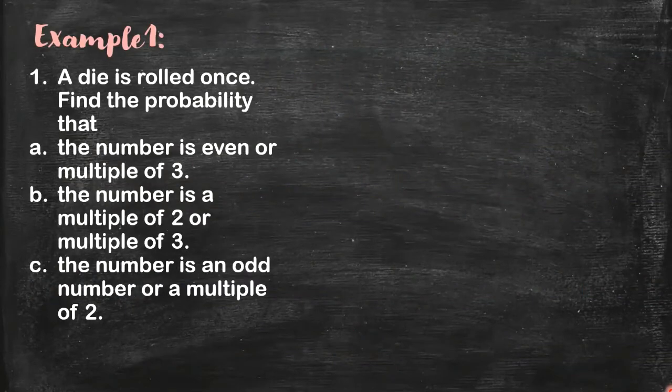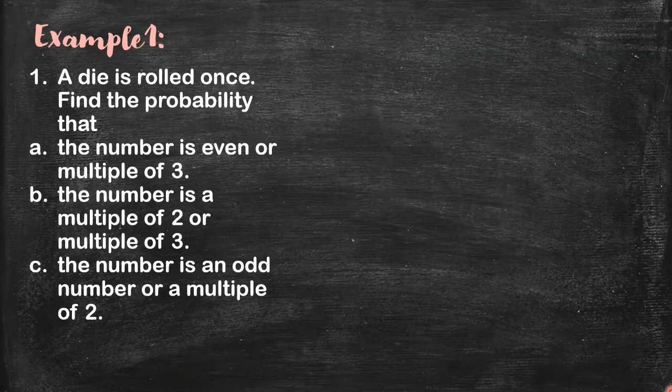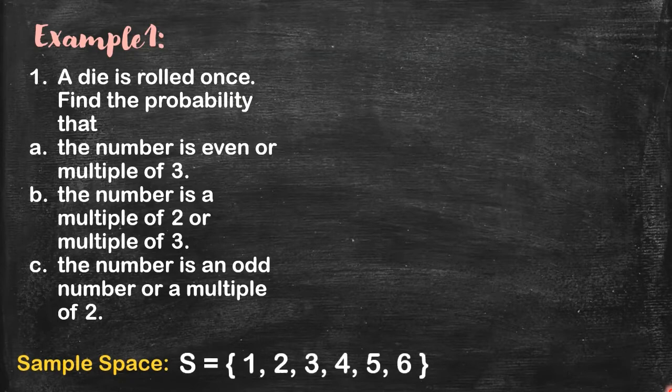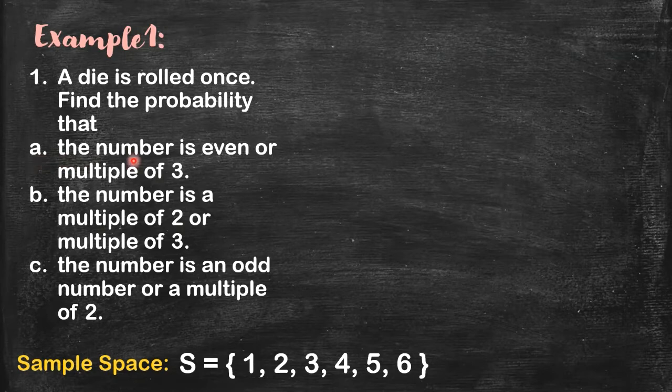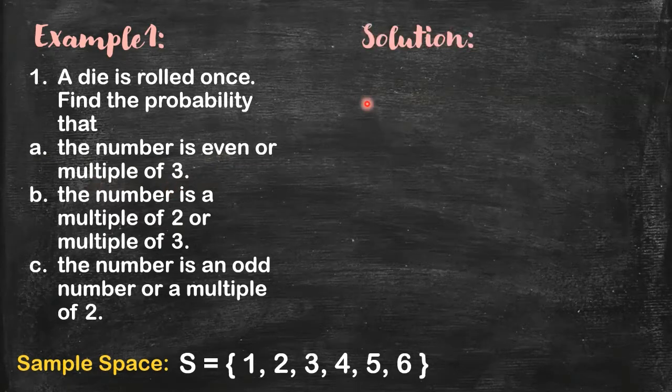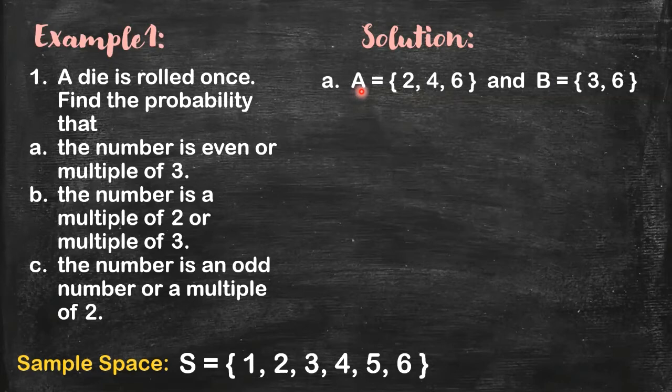This one is a basic example because we can easily visualize the sample space. And we have many examples of rolling a die. So can you give me the sample space? It contains the numbers 1 to 6, right? Now, we get the probability that the number is even or it is a multiple of 3. So we list down all the elements here. Set A contains all even numbers, and then set B contains all multiples of 3.